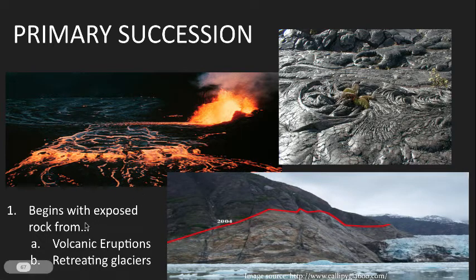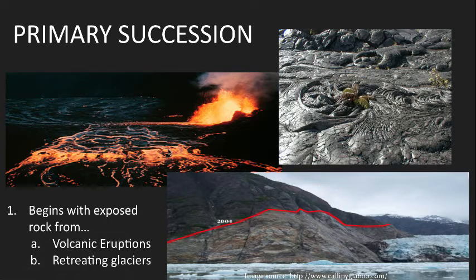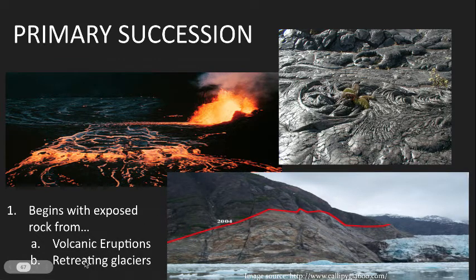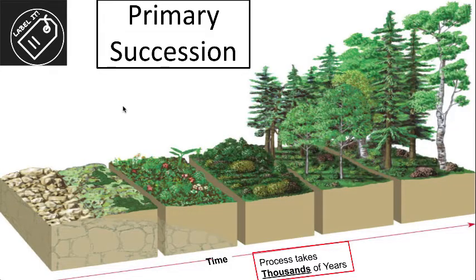Speaking of building on bare rock, this is what we refer to as primary succession — essentially the changing ecosystem starting from nothing. This bare rock is the foundation and then builds up from that. These ecosystems usually begin from either a volcanic eruption — like a reset button, with volcanic rock forming — where plants begin to find areas where their seeds can land and grow. Another starting point is retreating glaciers, which scrape away anything that was there and leave bare rock behind to be colonized by pioneer organisms.